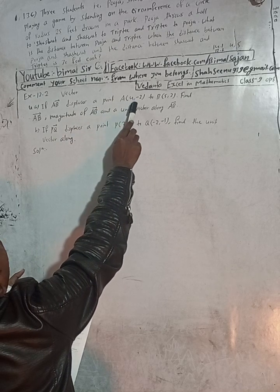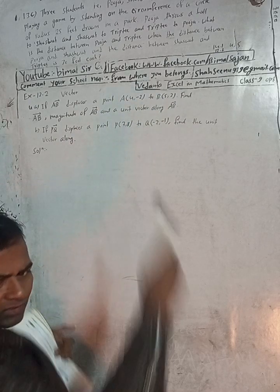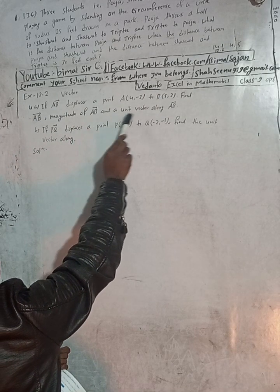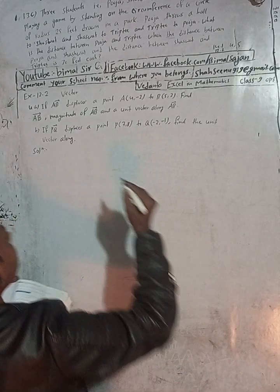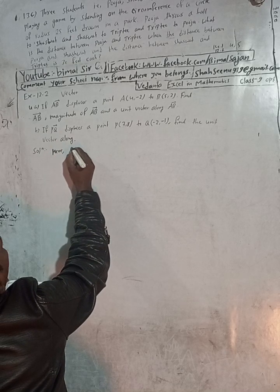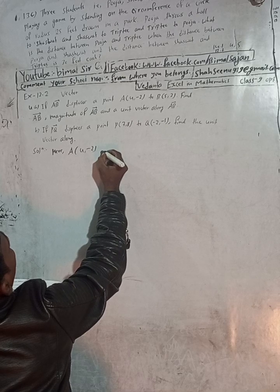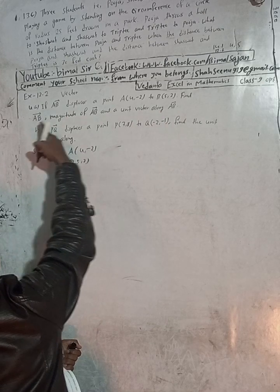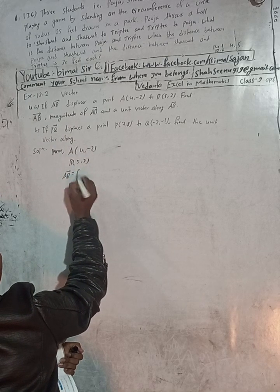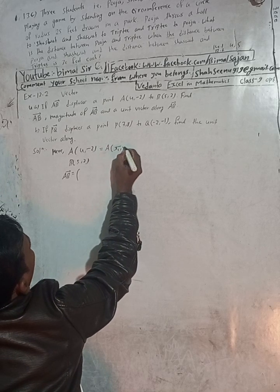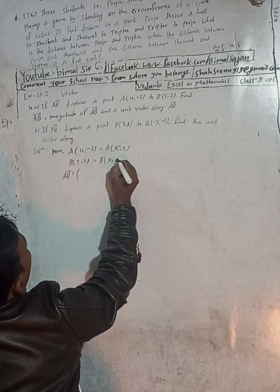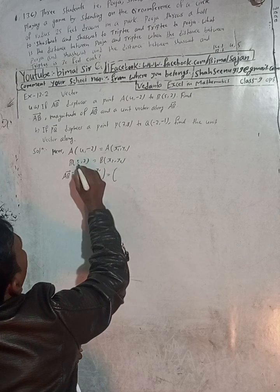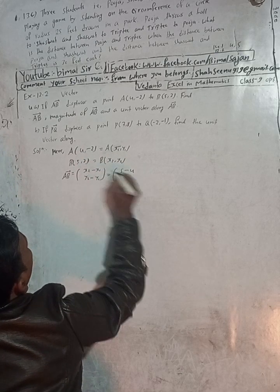Let's start the video. The question is: if AB vector displaces point A at (4, -2) to point B at (5, 2), find the AB vector, the magnitude of AB vector, and the unit vector. The formula is: AB vector equals (x2 minus x1, y2 minus y1).